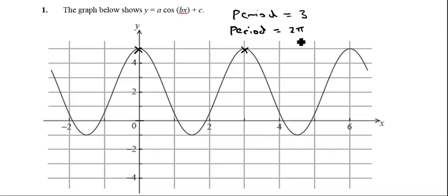equals 2π over B, when B is the number in front of the x. So therefore the period 2π over B is equal to 3, and therefore if I rearrange that, B is going to be equal to 2π over 3. Okay, so I've got the first bit, I've got the period correct.